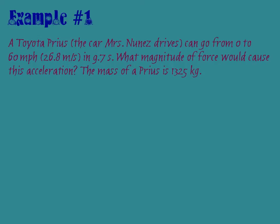In this video, we're going to learn how to use the Impulse Momentum Theorem to solve problems that relate a changing velocity to force and time. In this problem, the Toyota Prius can go from 0 to 60 miles per hour in 9.7 seconds. We want to know what magnitude of force would cause this acceleration, and we're given the mass of the Prius. We could solve this using kinematics equations to find the acceleration and then Newton's second law, but because we're learning about impulse and momentum, we're going to use the Impulse Momentum Theorem instead. The nice thing about that theorem is it combines finding acceleration and force all into one step.